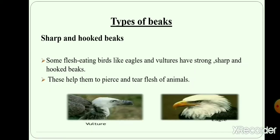Sharp and hooked beaks. Flesh-eating birds like eagles and vultures have sharp and hooked beaks which help them to tear their prey into smaller parts. Such type of beaks are known as piercing and tearing beaks.